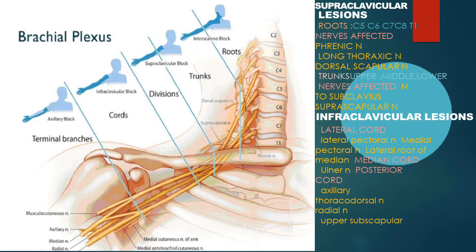Coming to the anatomy, the brachial plexus is formed by the joining of the roots C5, C6, C7, C8, and T1. These roots form three trunks — upper, middle, and lower. From each trunk there are anterior and posterior divisions, which join to form three cords: medial cord, lateral cord, and posterior cord. All these cords finally give the terminal branches.